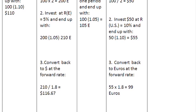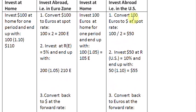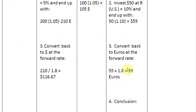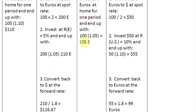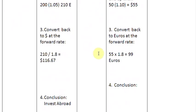So what we observe here is that we start with 100 euros and we end up with only 99 euros. Comparing this with the alternative of investing at home: you make 105 euros at home, but only 99 euros by taking your money to the US and then bringing it back at the forward rate. So the conclusion in this case is: invest at home.